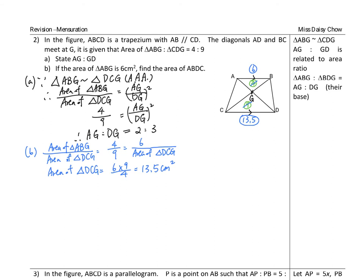Then the question is, this one is how much? Then you will try to calculate the two parts. Then you can calculate part A. Part A will give you tips. The part A is AG to GD is 2 to 3.